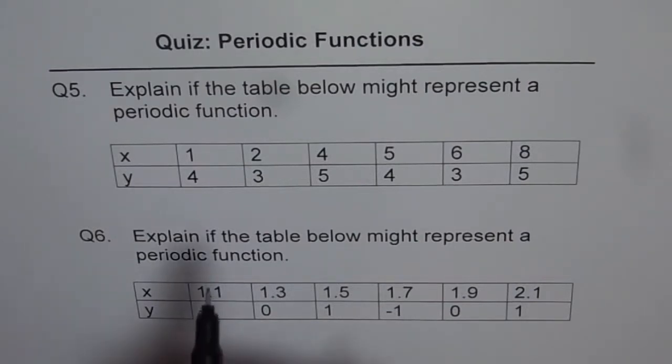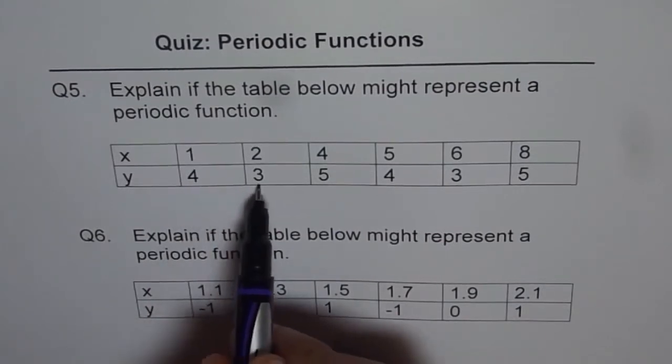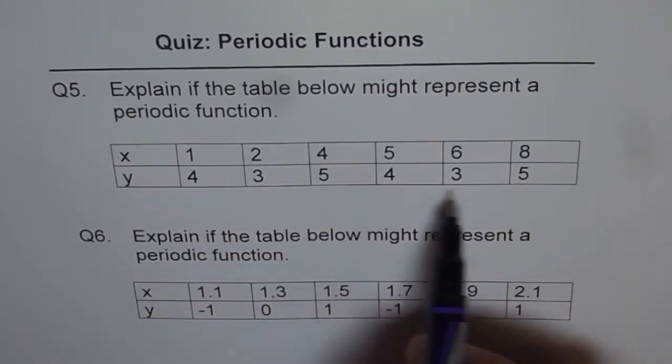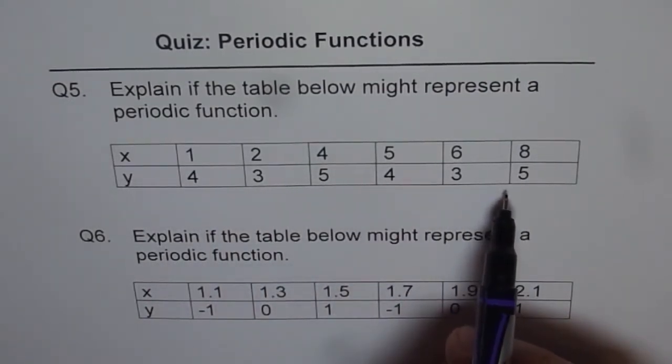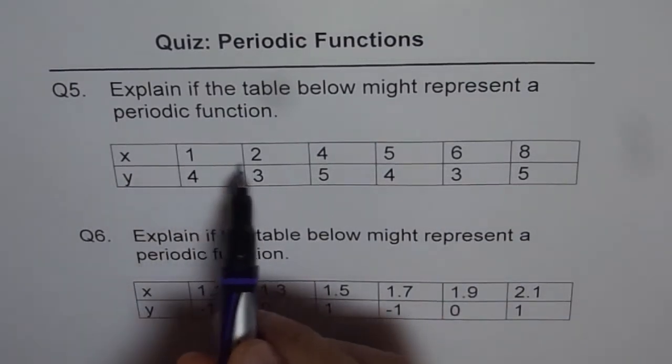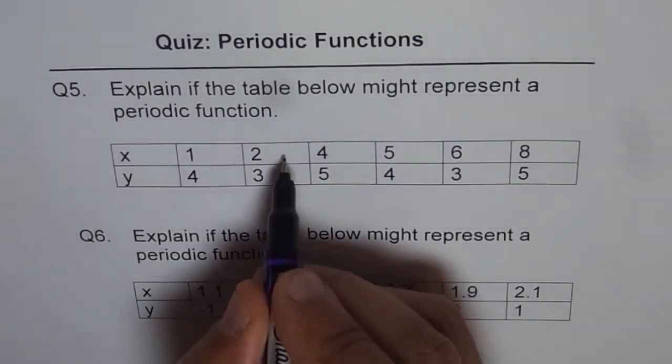If you notice, the output is periodic: four, three, five, four, three, five. It repeats. But there is a catch. The input one, two, four, five, six is not regular.